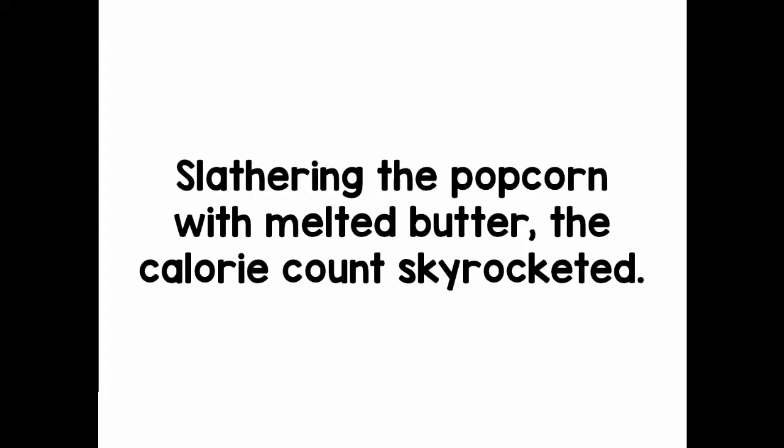Now I have some for you to try on your own. Number one: 'Slathering the popcorn with melted butter, the calorie count skyrocketed.' In this sentence we have a dangling modifier because we don't know who is slathering the popcorn with melted butter. Any name you put in will work. A correct sentence would be: 'When Ada decided to slather the popcorn with melted butter, the calorie count skyrocketed.' The calorie count isn't slathering the popcorn — we need a person in there so it's no longer a dangling modifier.